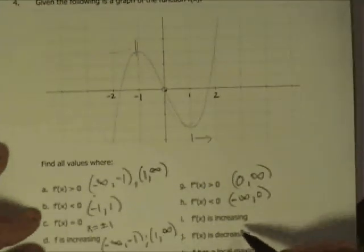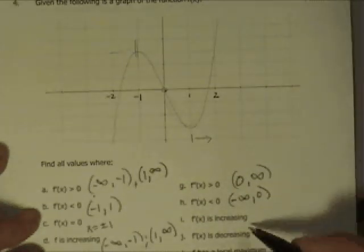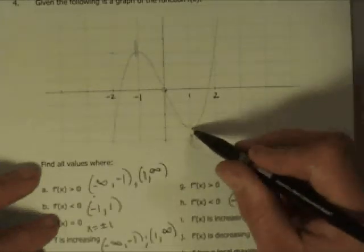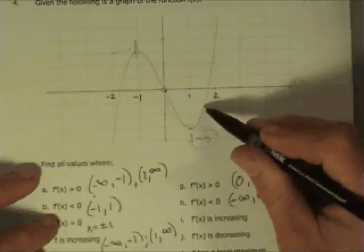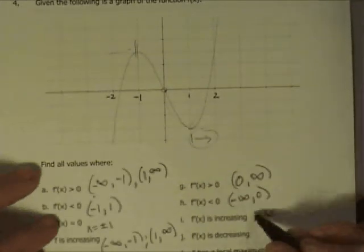Where is the function of the derivative increasing? That's when the slope is increasing. And you can see down here, this is the area where the slope starts out. It's small, just above 0, and then it increases more steeply. So, we know that the derivative is increasing from 1 to infinity.